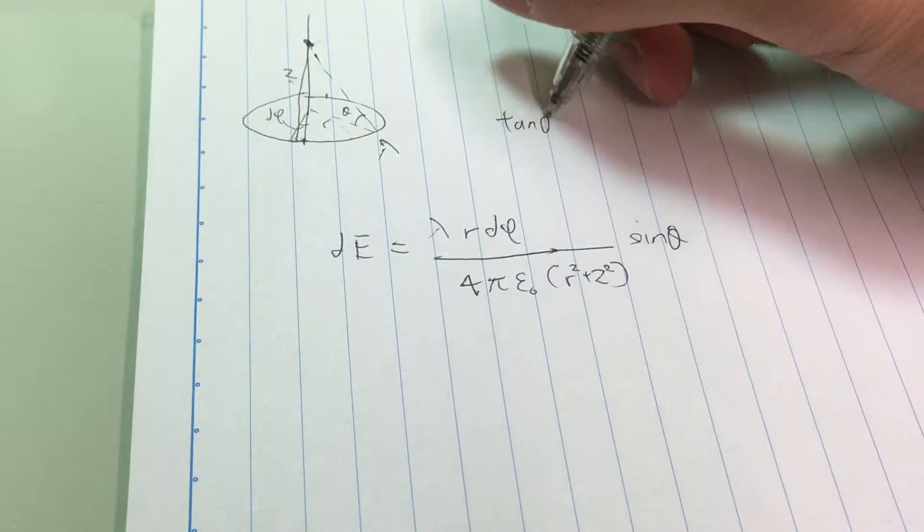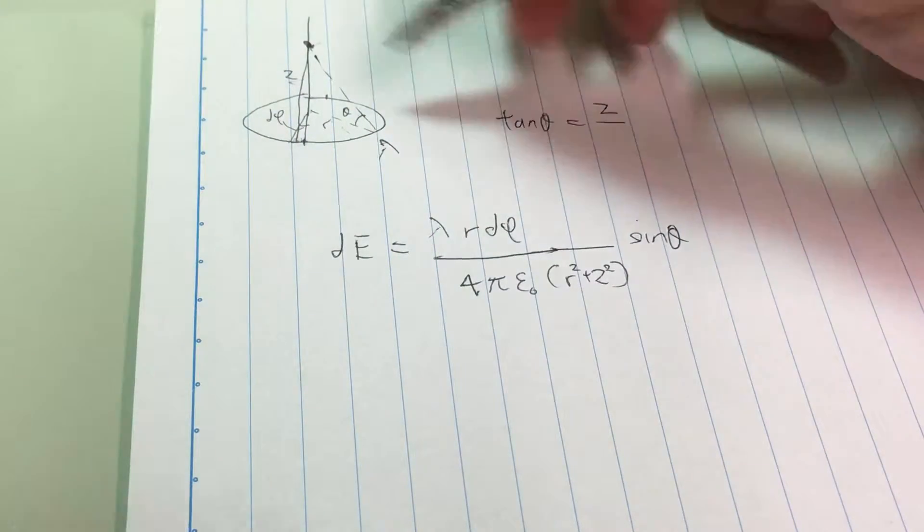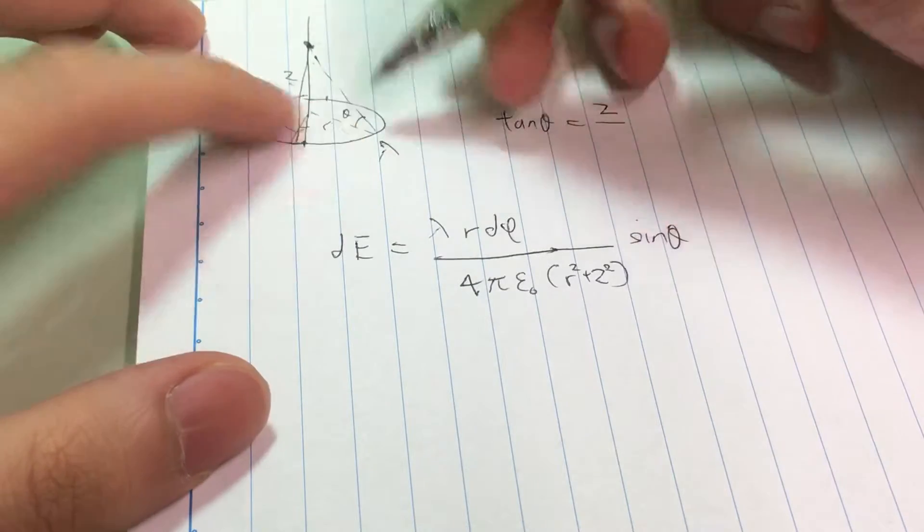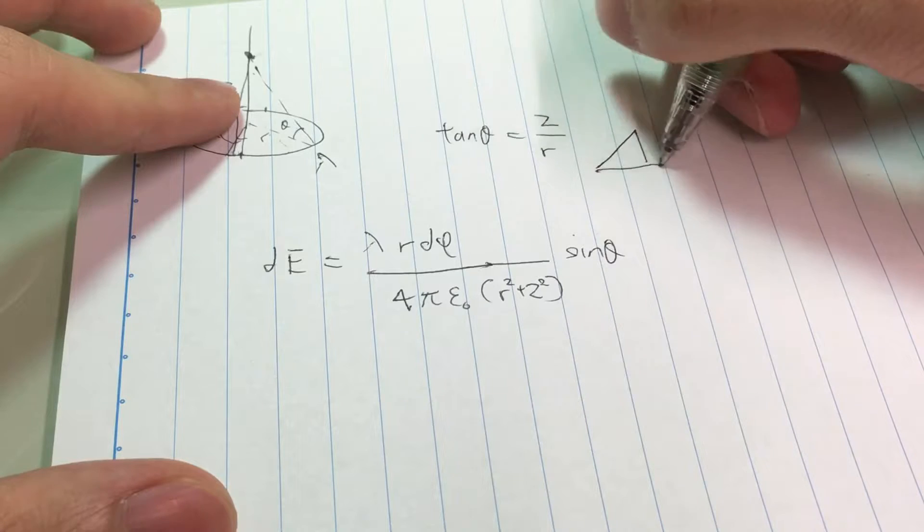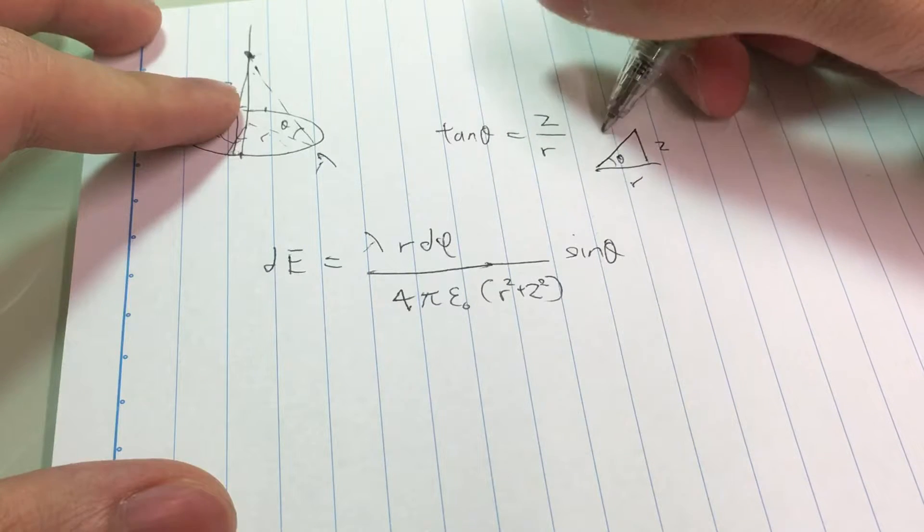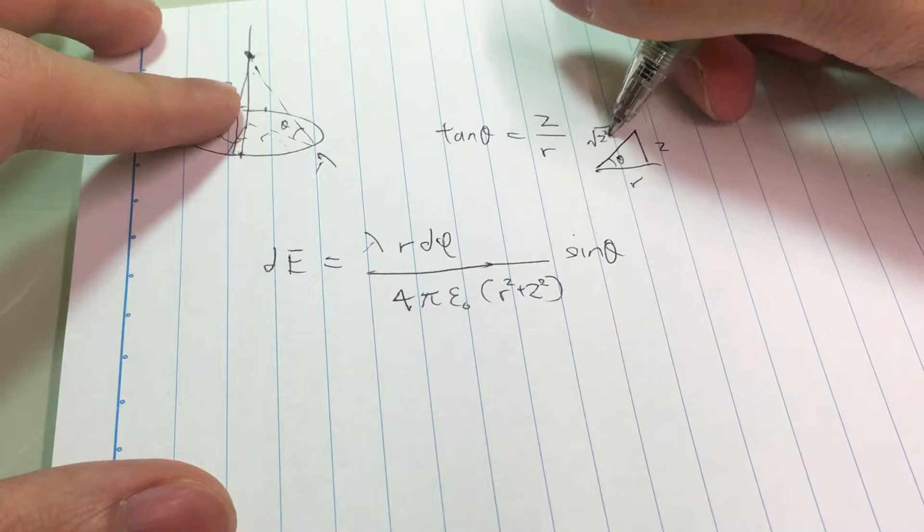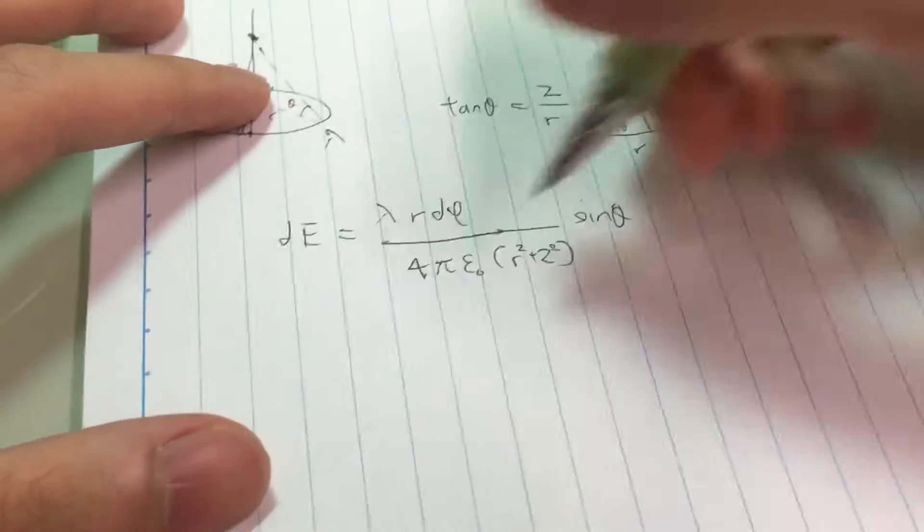What's this sine theta? We can find that by using tangent theta, which is z divided by r. With this, we can draw a triangle with this as theta. This would be z squared plus r squared. What's sine theta?